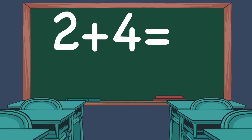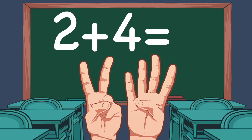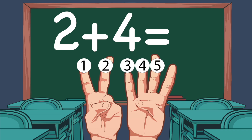Let's do another one: 2 plus 4. On our left hand, we show 2 fingers. On our right hand, we show 4 fingers. Now let's count the total number of fingers: 1, 2, 3, 4, 5, 6. So 2 plus 4 equals 6.